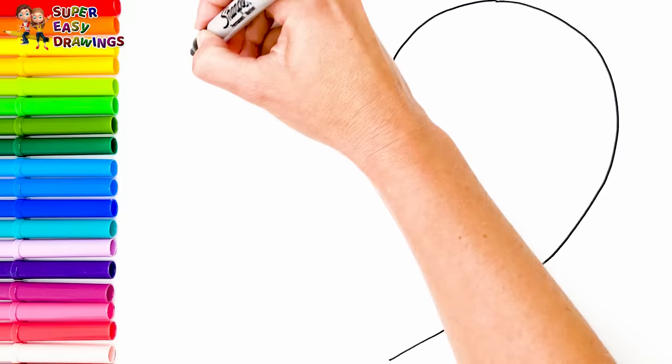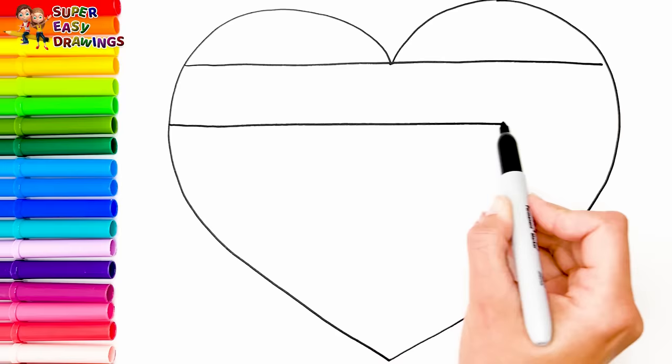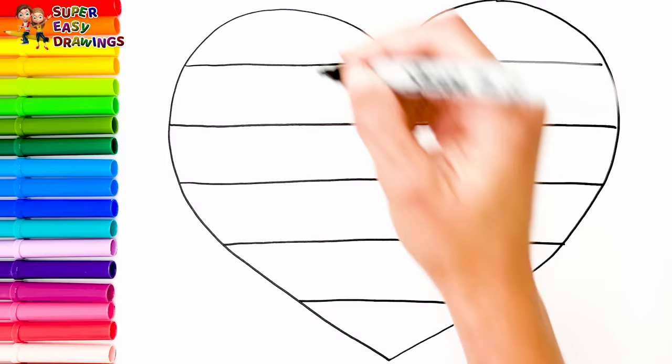Now we are going to divide everything with horizontal lines from above to the bottom. And then we draw little circles in all lanes.